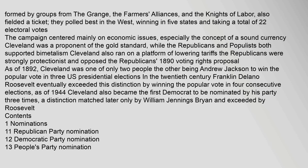The new Populist Party, formed by groups from the Grange, the Farmers' Alliances, and the Knights of Labor, also fielded a ticket. They polled best in the West, winning in five states and taking a total of 22 electoral votes.